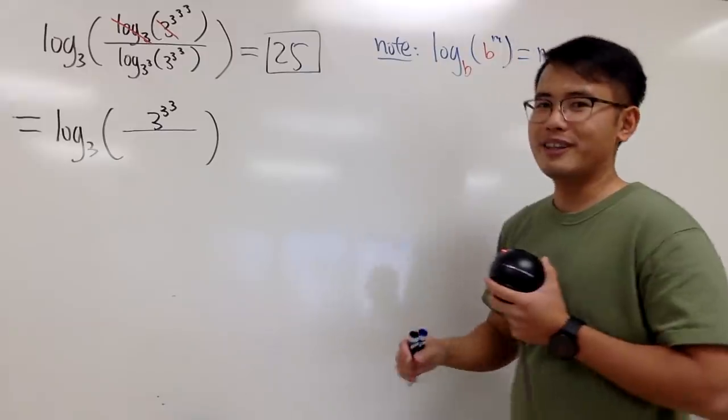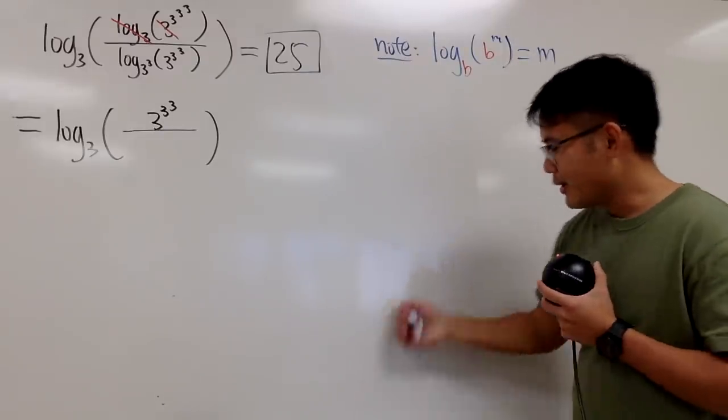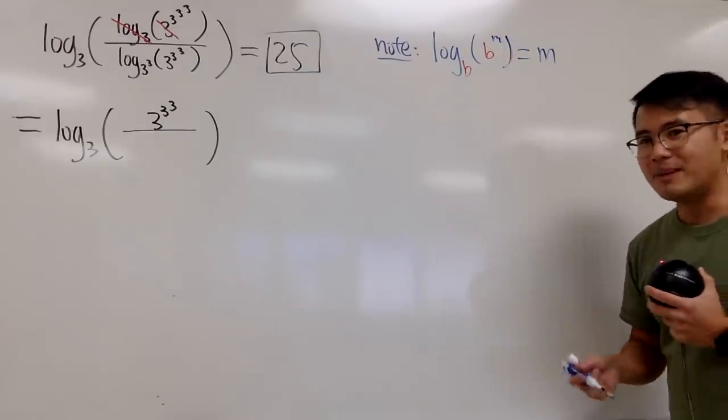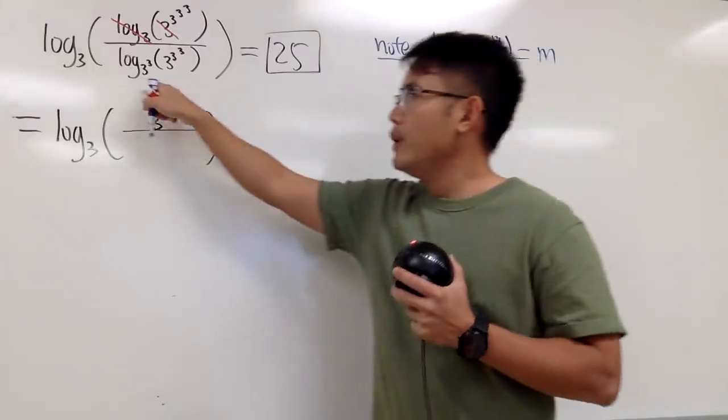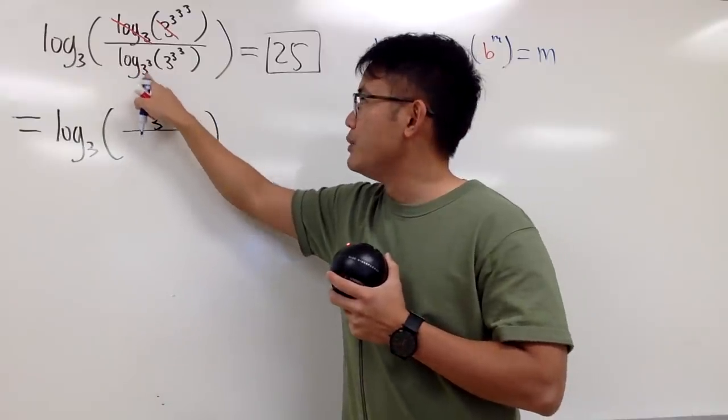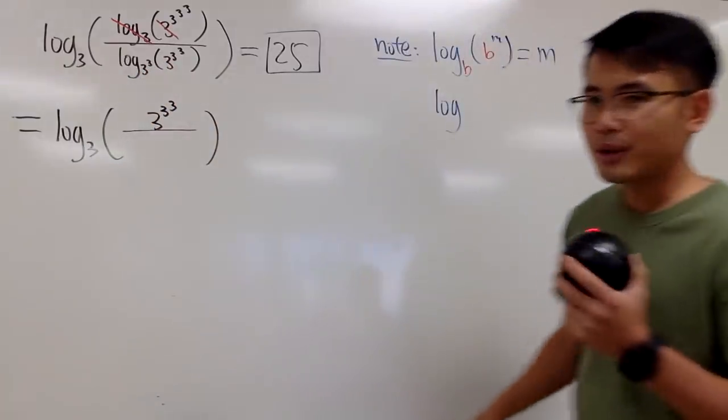Well, how can we calculate that? Well, don't worry, I will show you. So here is the other property that I'm going to use for you guys. So here's the deal. We are pretty lucky because this 3 still match with that 3. So here's the property.